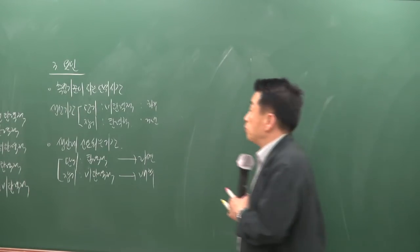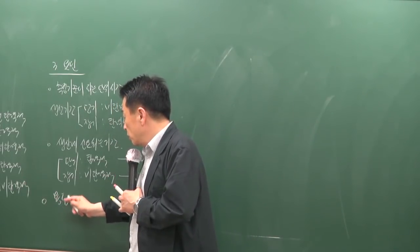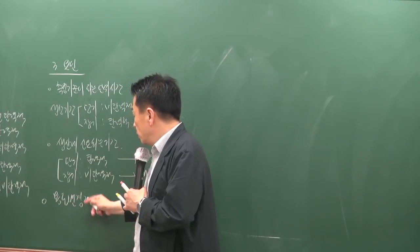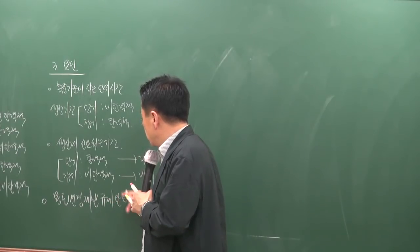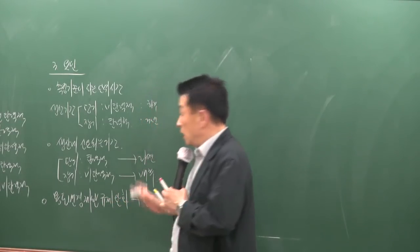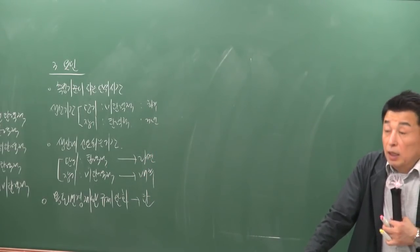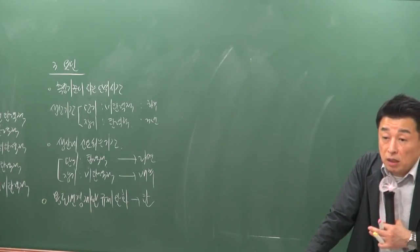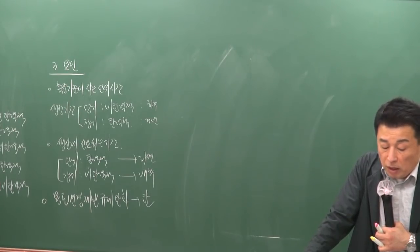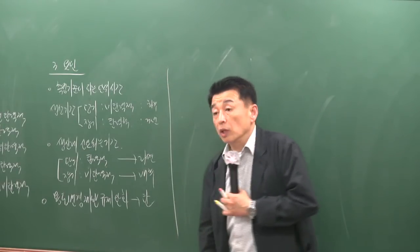부동산 공급은 대부분 용도 변경을 통해서 이루어져요. 용도 변경을 제한하는 규제가 완화되면 탄력적이 되고, 강화되면 비탄력적이 돼요. 생산요소 가격이 상승할수록 비탄력적이 되는데, 가격 상승을 통한 이윤이 생산비 상승으로 상쇄되어버려 공급을 많이 늘릴 수 없기 때문이에요.